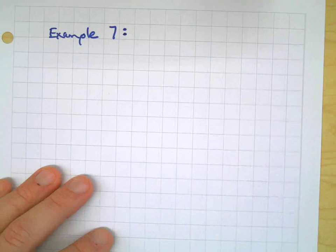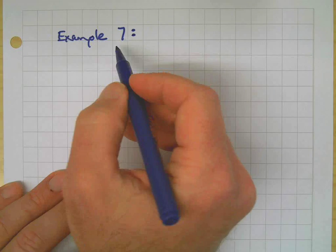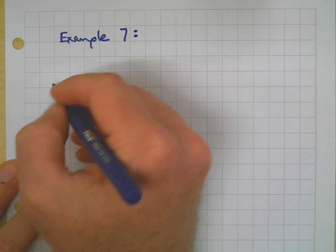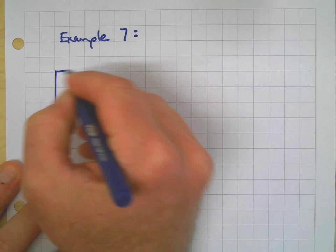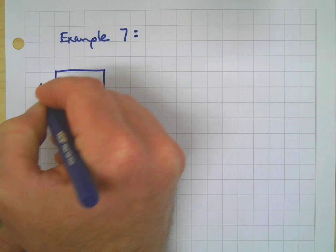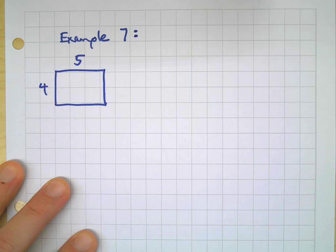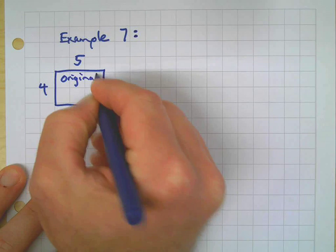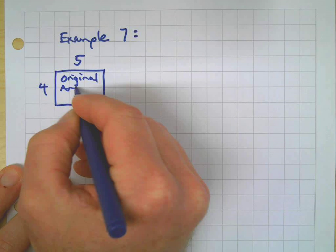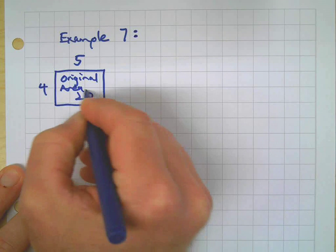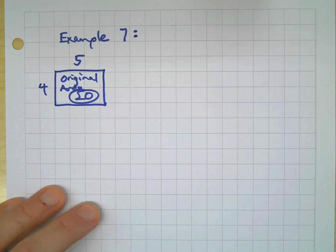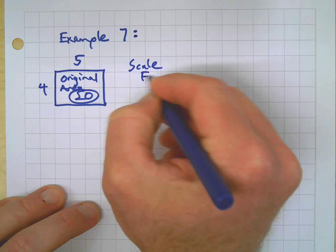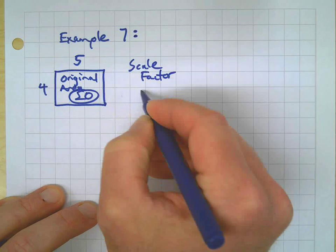For example two, let's say we've got a four by five rectangle as our original. The area is twenty — four times five. Now let's apply a scale factor of three.